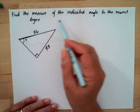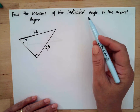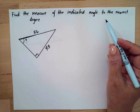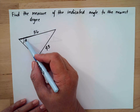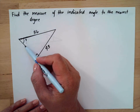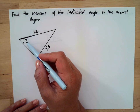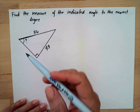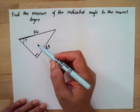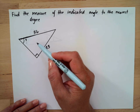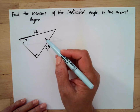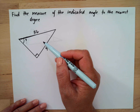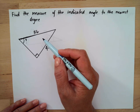Find the measure of the indicated angle to the nearest degree. This is the angle that we are looking for. The first thing we need to do is identify the parts of the triangle, and the first part we need to identify is the hypotenuse.